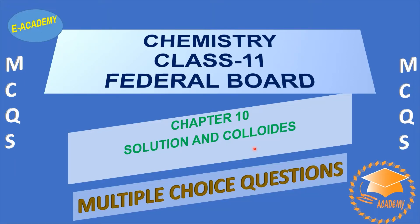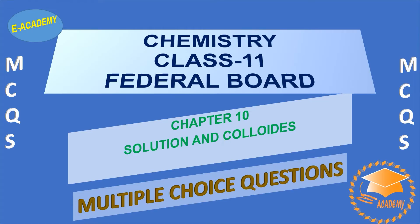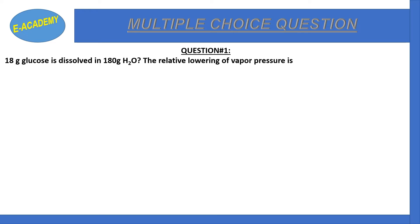Assalamu alaikum students, I hope everyone will be fine. Today we will discuss Chemistry Class 11 Federal Board, Chapter 3: Solutions and Colloids multiple choice questions. Question number one: 18 grams of glucose is dissolved in 180 grams of water. The relative lowering of vapor pressure is?